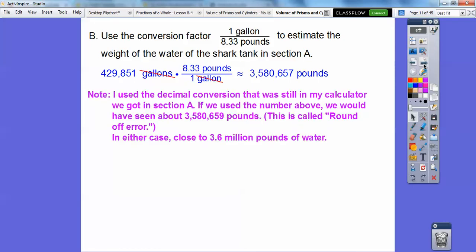Now, I just used the decimal conversion that was still in my calculator from section A. If we used this number above, if we use that number multiplied by 8.33, we'd get the 659 pounds instead of the 657 pounds. So it's called round off error, and actually this answer is more accurate because I had the decimal conversion, which was more accurate. The more decimals you have, the more accurate you are. So this one's more accurate, but in either case, they're both close to 3.6 million pounds of water right there.